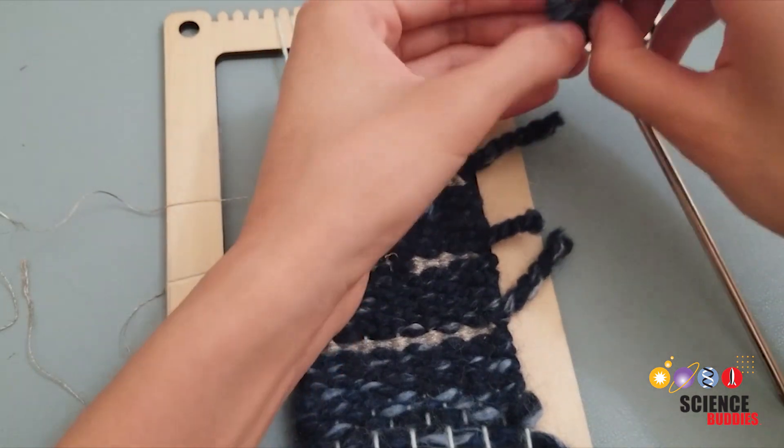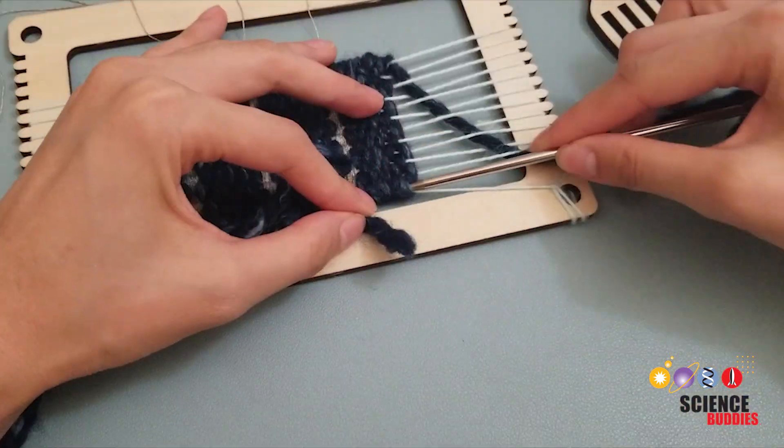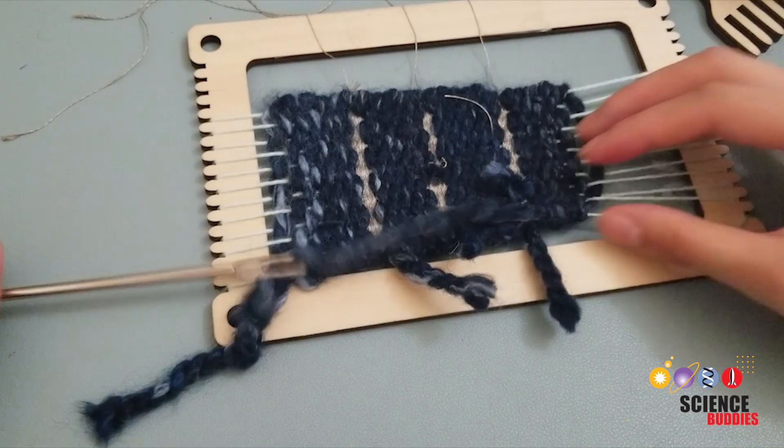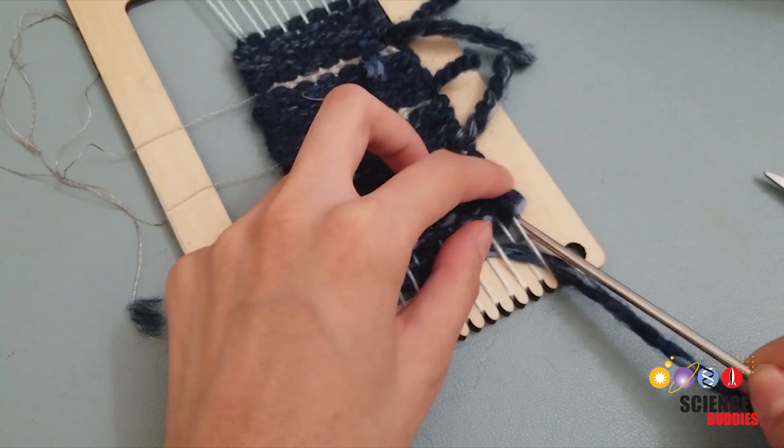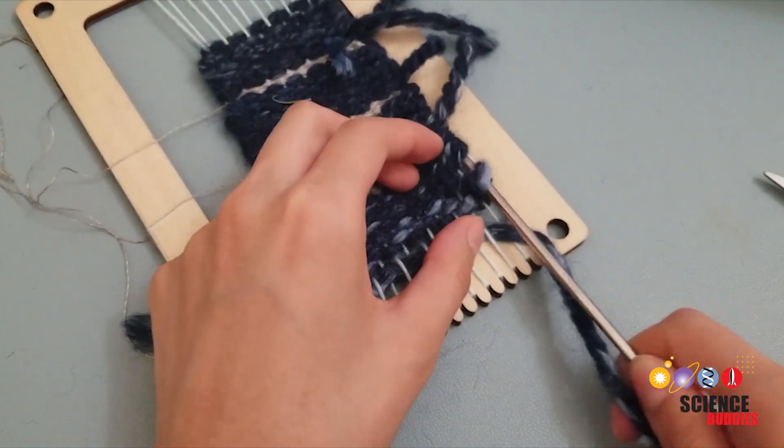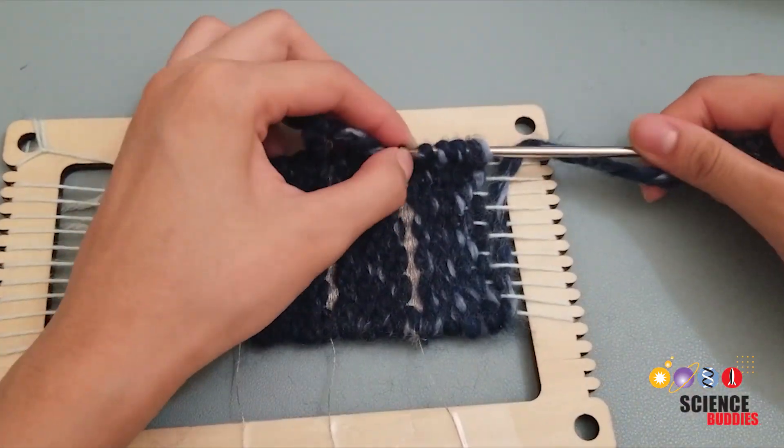You should have a 3-4 inch tail of thick yarn at the beginning of your patch and at the end of your patch. Working on it one at a time, tie the excess yarn to your tapestry needle. Thread the excess yarn through at least 3-4 side loops down the outer edge of the woven patch.